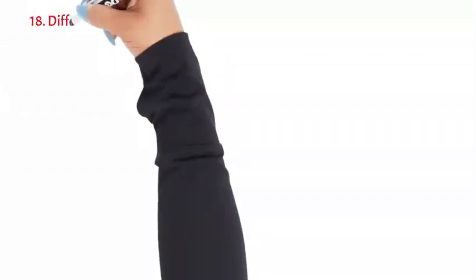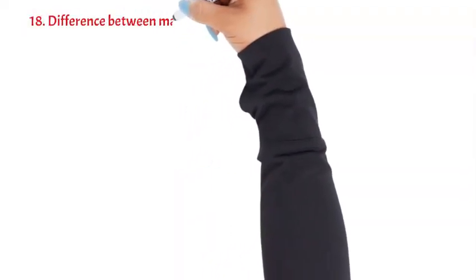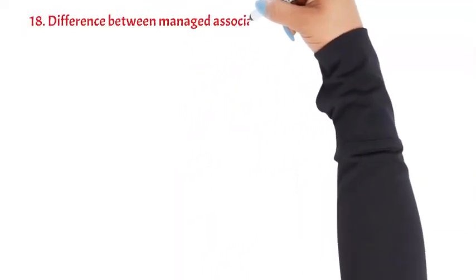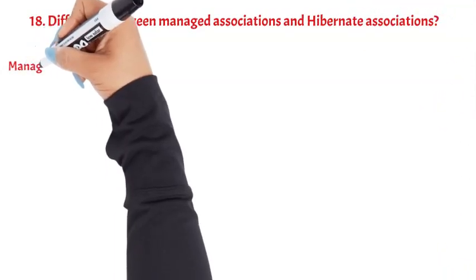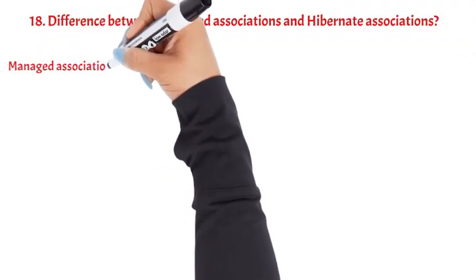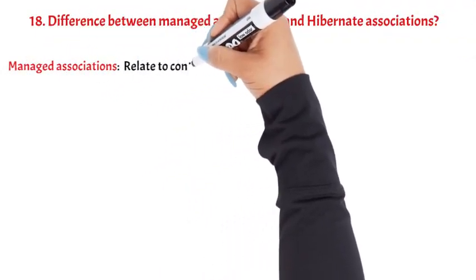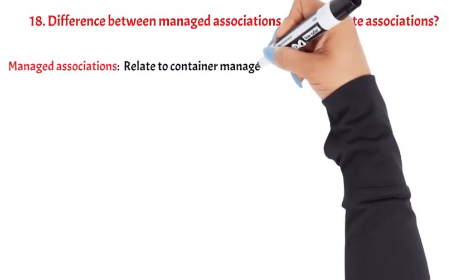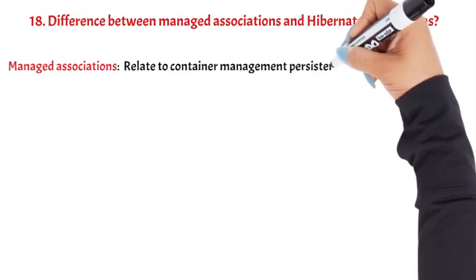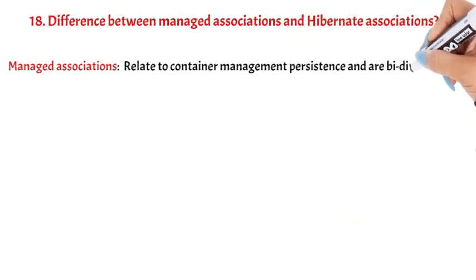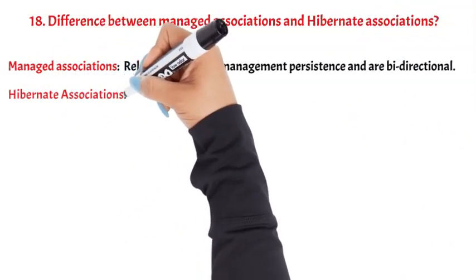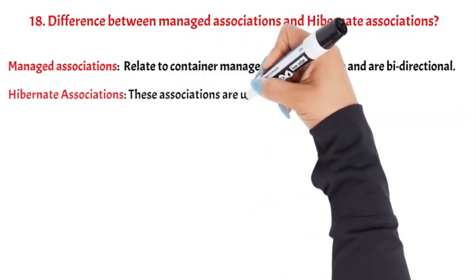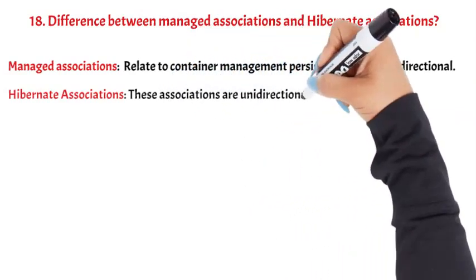Question 18: Difference between managed associations and Hibernate associations. Managed associations relate to container-managed persistence and are bidirectional. Hibernate associations are unidirectional.